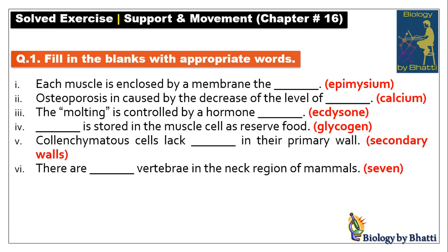Fill in the blank number four: dash is stored in the muscle cell as reserved food. Animals store glycogen as their reserved carbohydrate storage material. Number five: collenchyma cells lack dash in their primary wall.